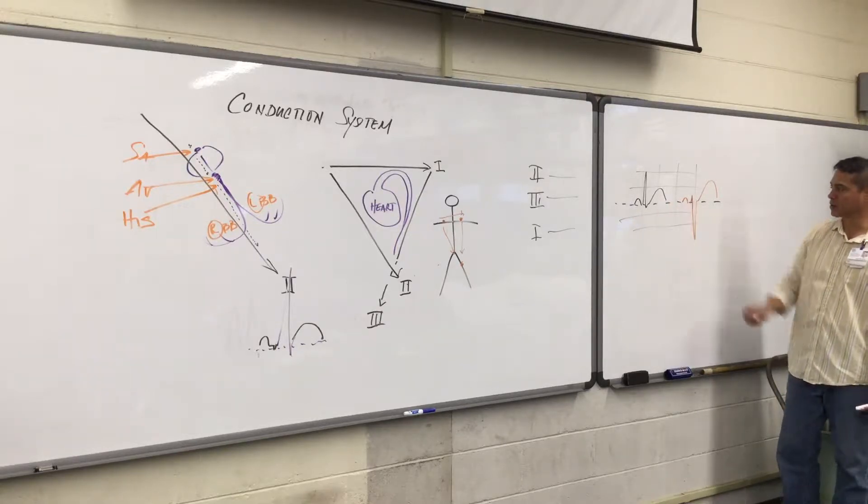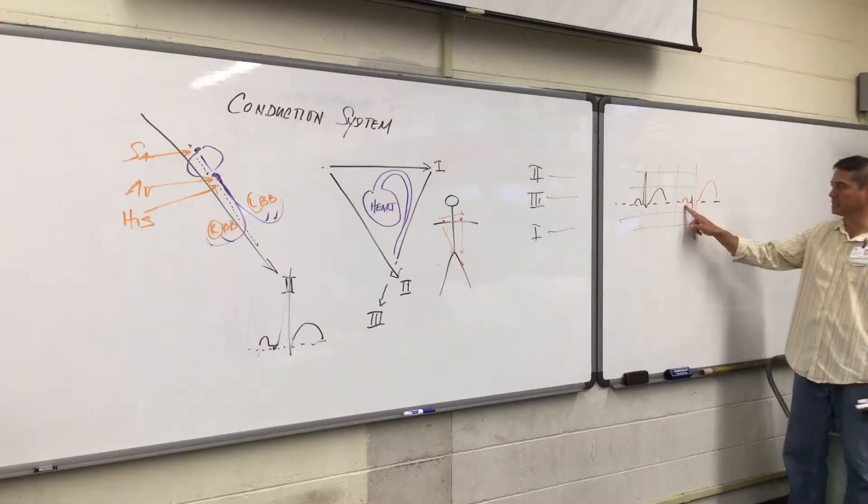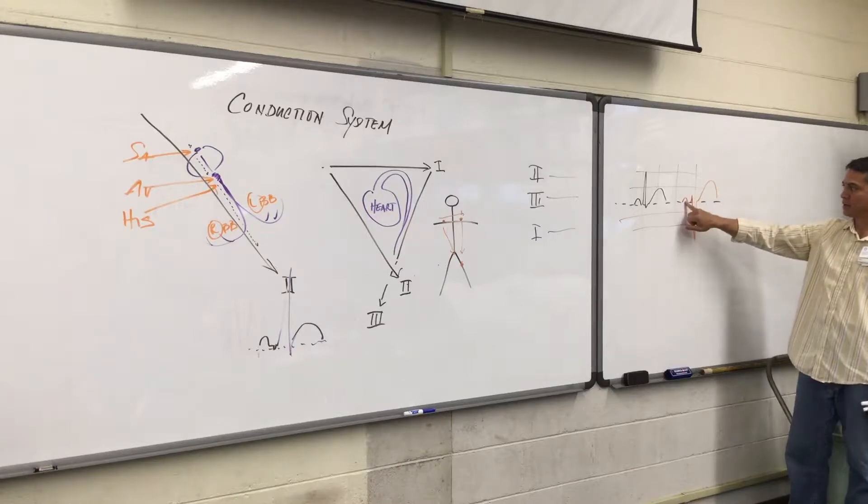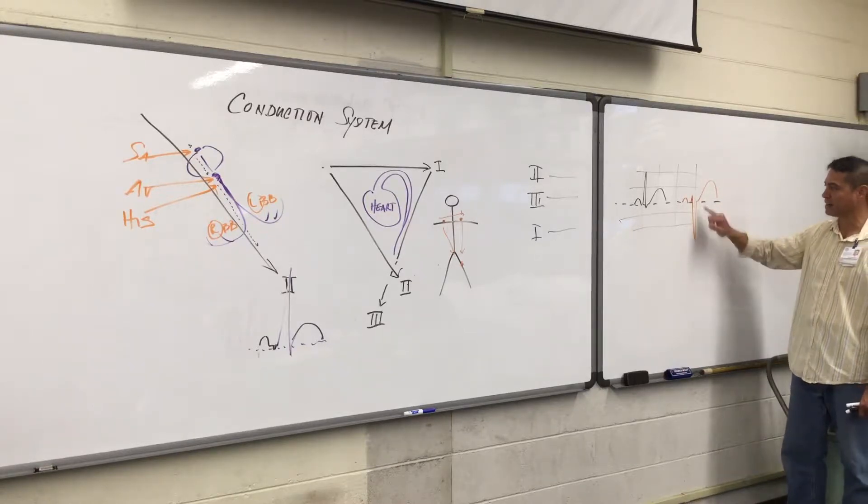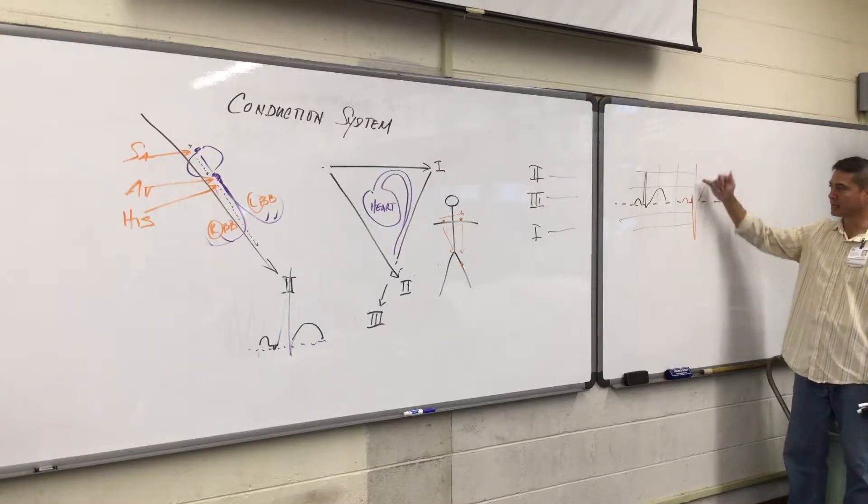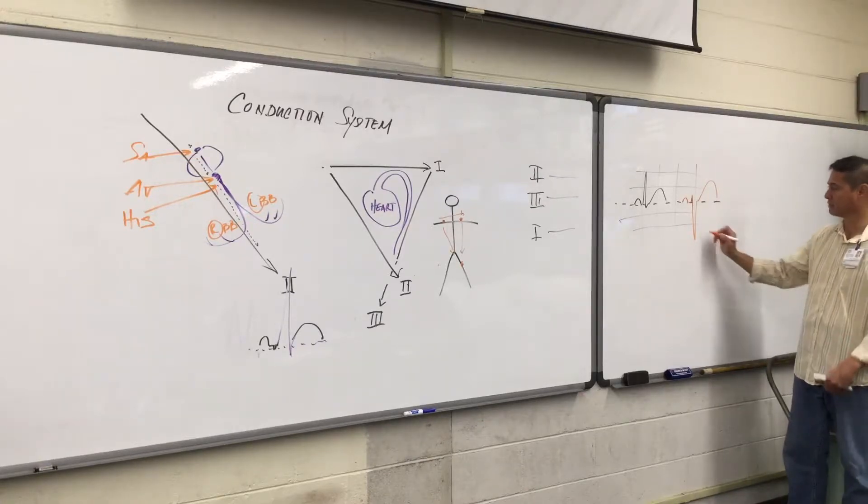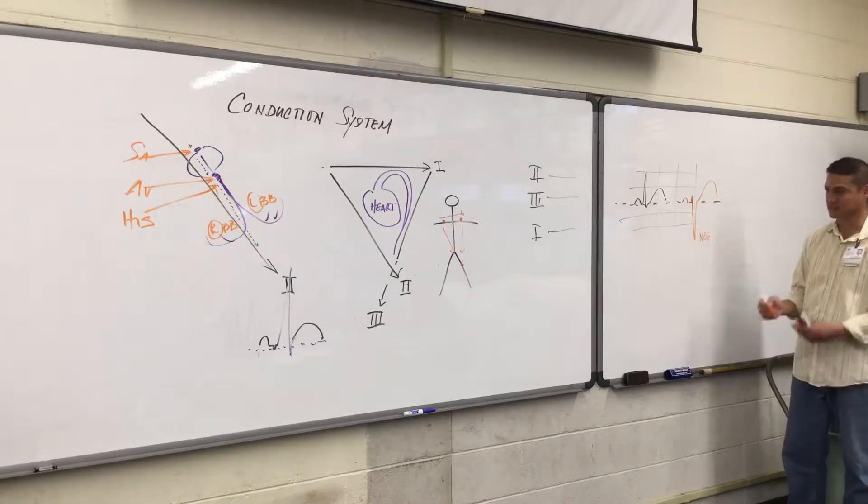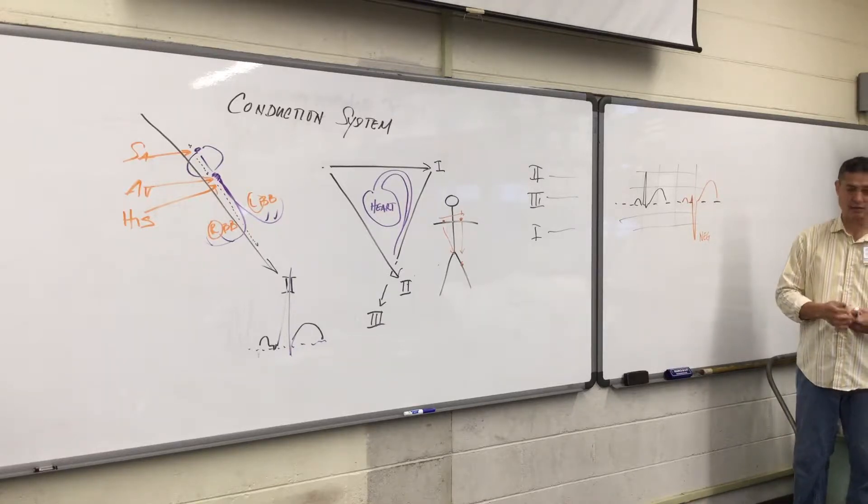On the opposite here, this orange QRS complex and EKG complexes here, we have an upright P wave but then a negative deflection of the QRS. Again, this is that imaginary baseline, so this one would be mostly negative. Energy in that case is flowing away from that direction.